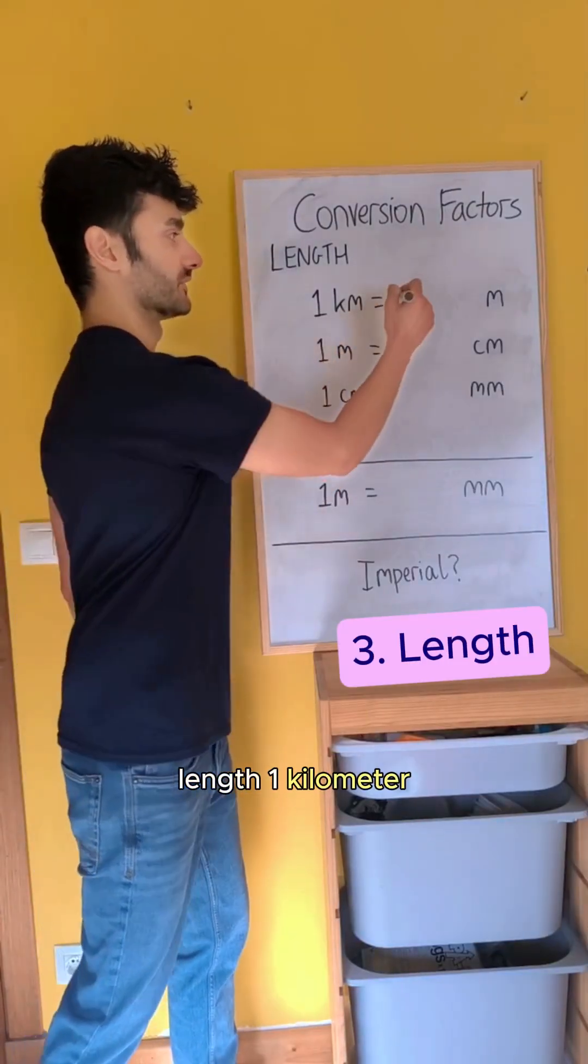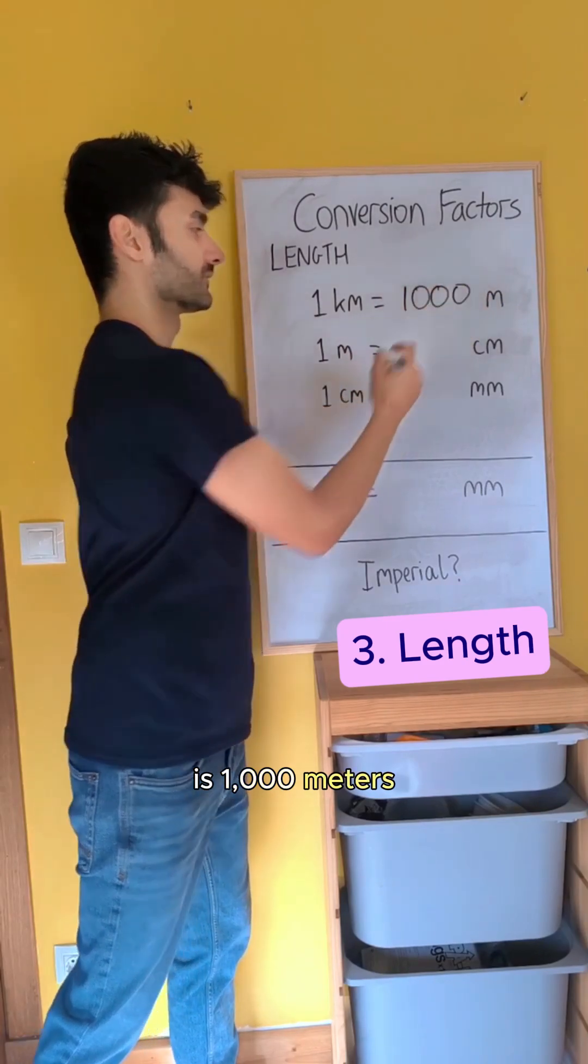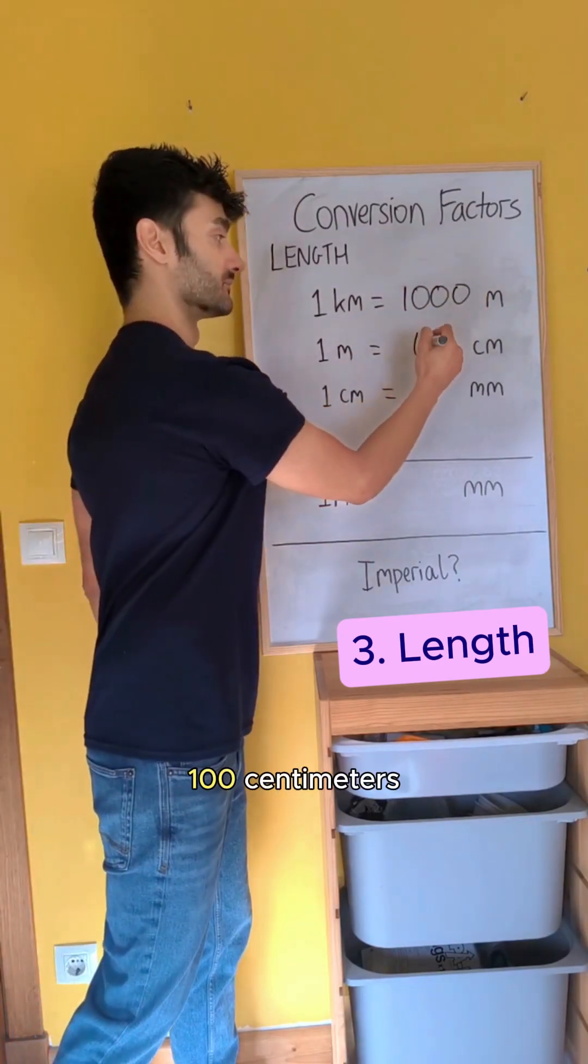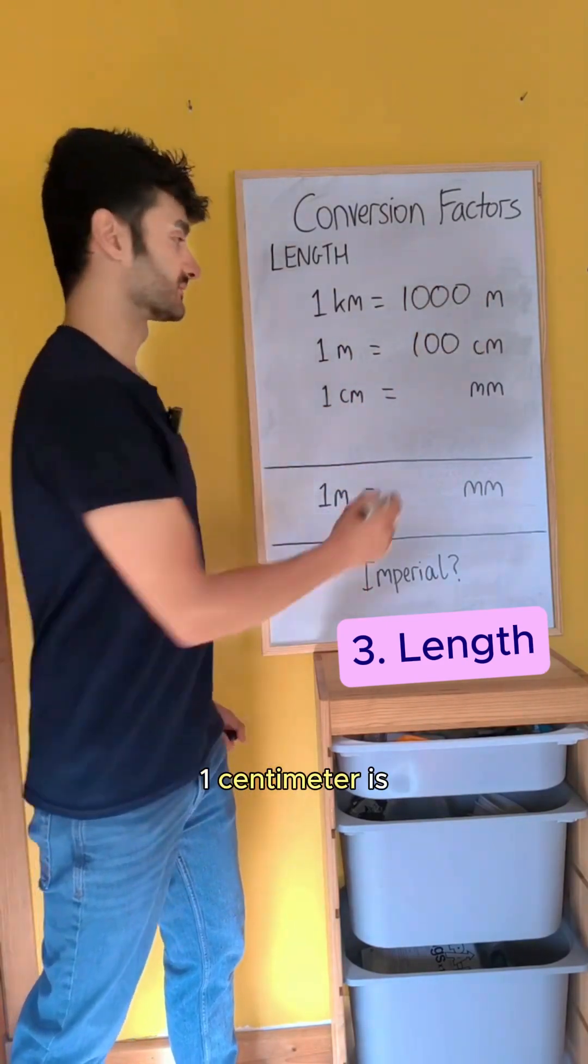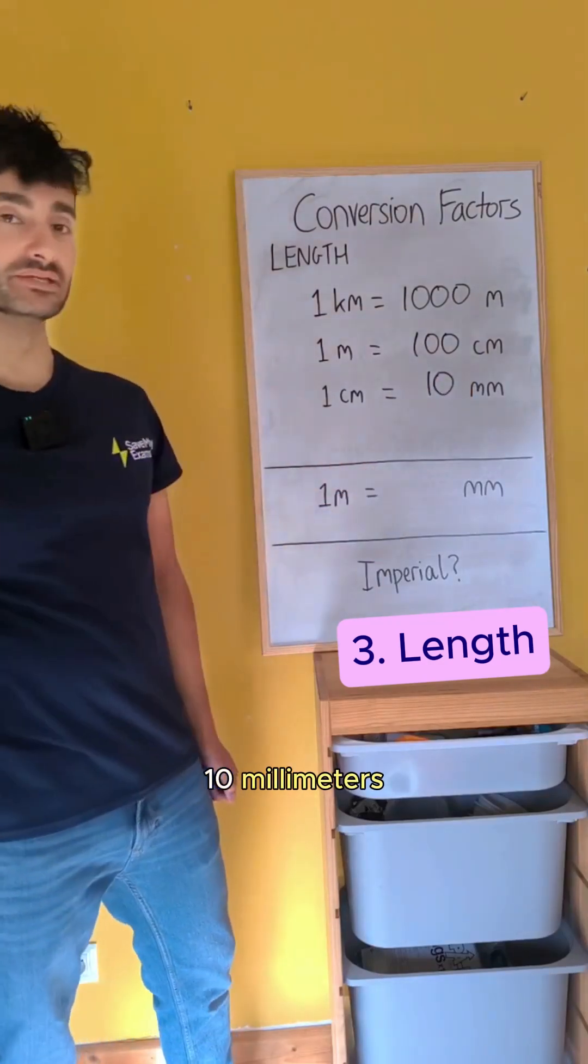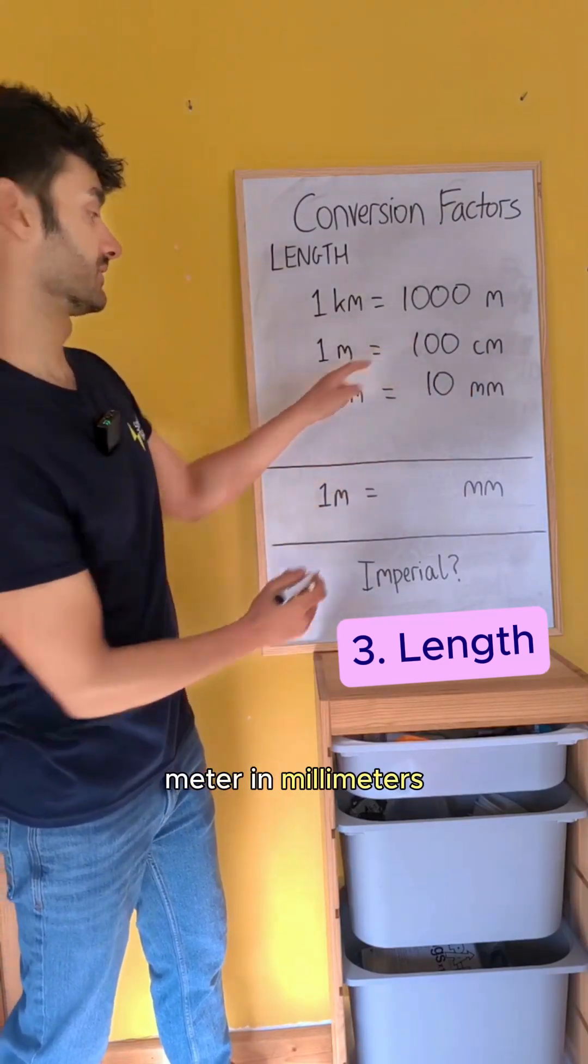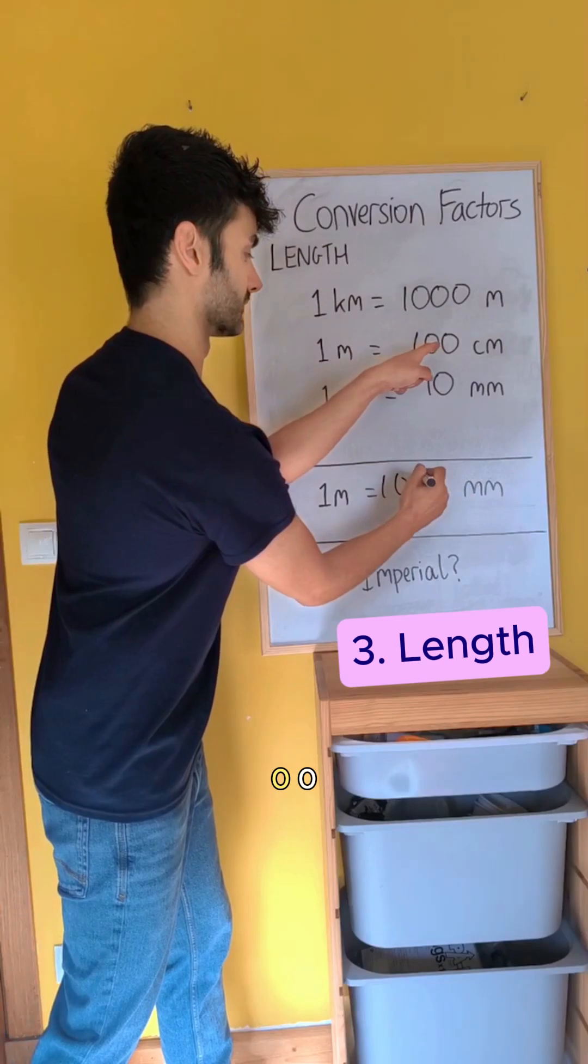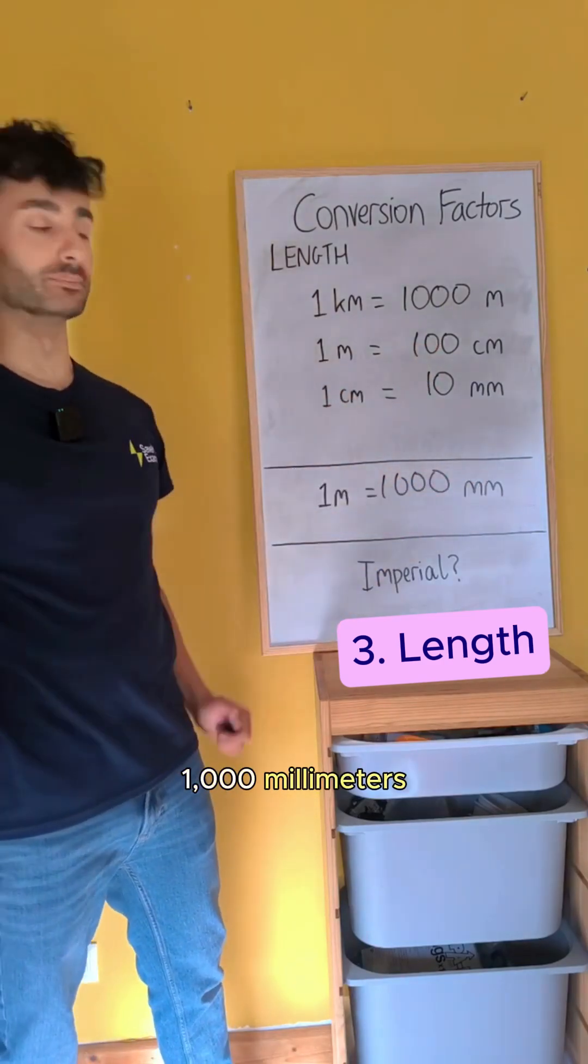Length. One kilometer is a thousand meters. One meter is a hundred centimeters. One centimeter is 10 millimeters. That makes one meter in millimeters one zero zero zero, a thousand millimeters.